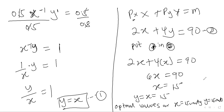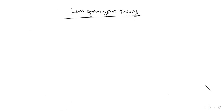The other approach is to use the Lagrangian theory. The Lagrangian theory is a mathematical theory used to solve any kind of constrained optimization questions. When I say constrained optimization, it is when you are constrained with something even though you want to maximize something. In our case, even though we are constrained by our budget, we want to maximize our satisfaction.